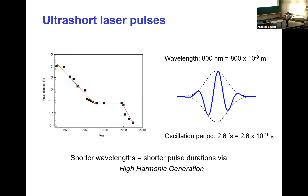Why does that graph stop in 2005? It's because I took a figure from an article published around 2008. We have not dropped much further since — we are maybe around 20 to 50 attoseconds at the moment. There are concepts out there for going even shorter, but they have not yet been realized.